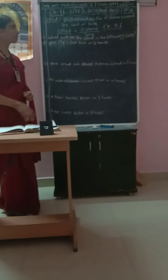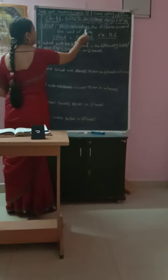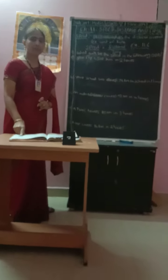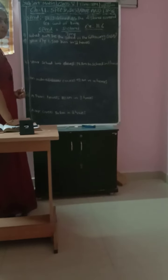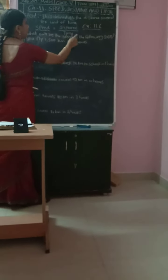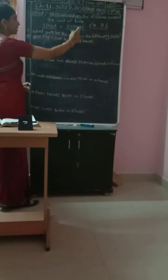Today we learn about speed. What is speed? Speed is defined as the distance covered per unit of time. What is the formula of speed? Speed is equal to distance divided by time taken. This is the formula, and we will solve some problems given in exercise 11.6.